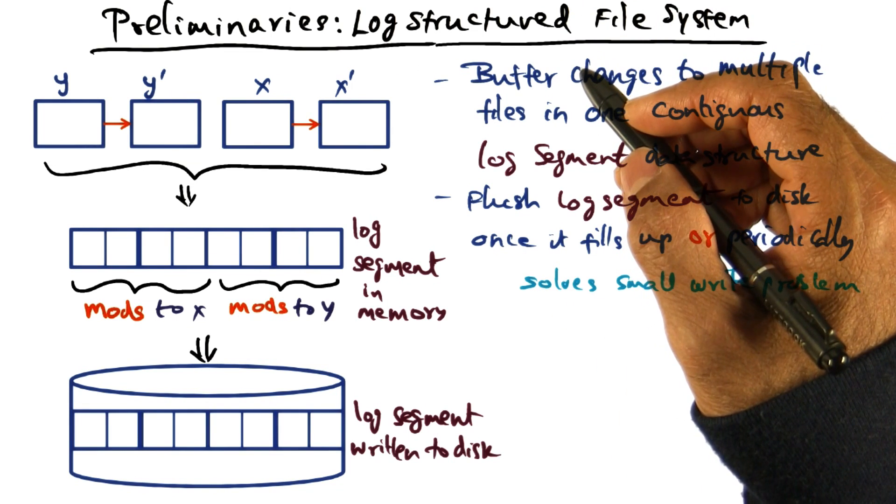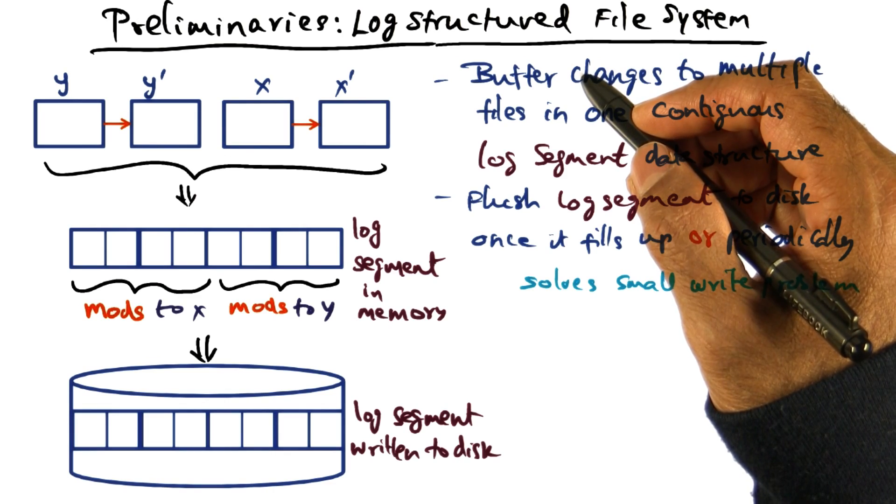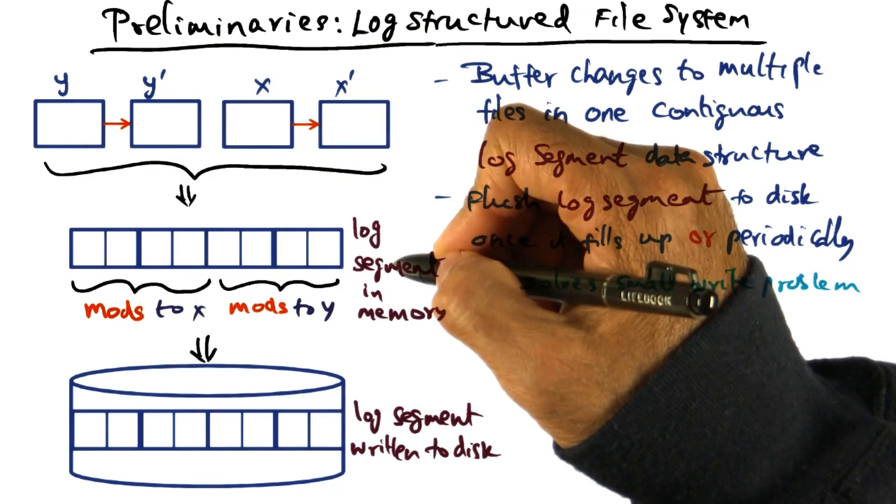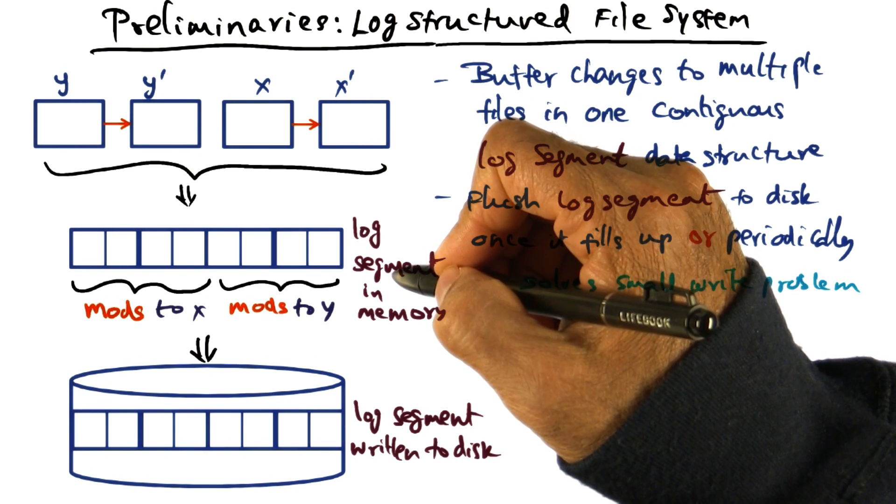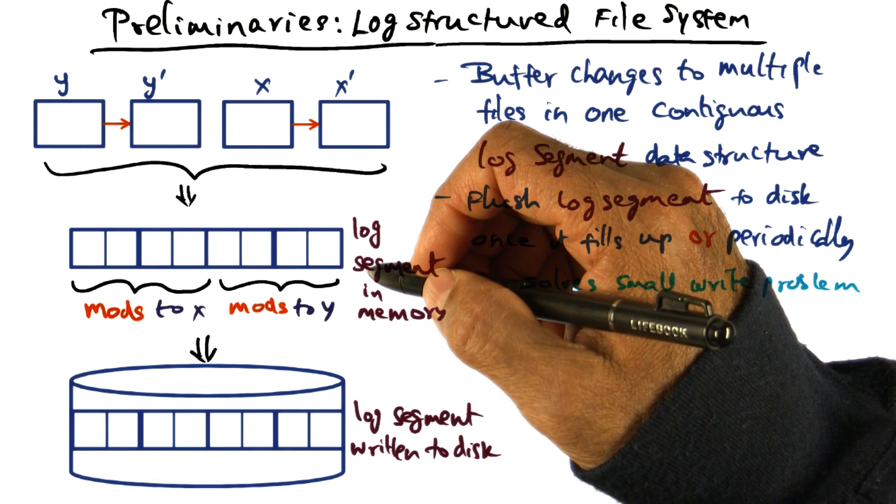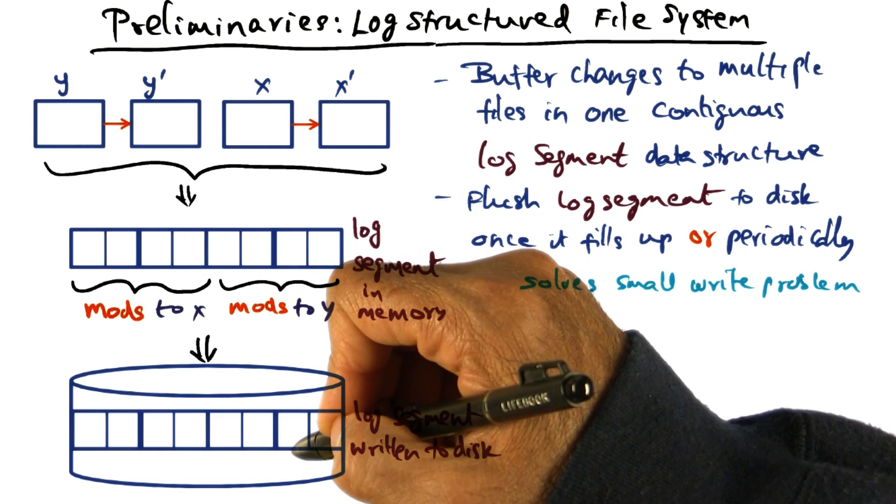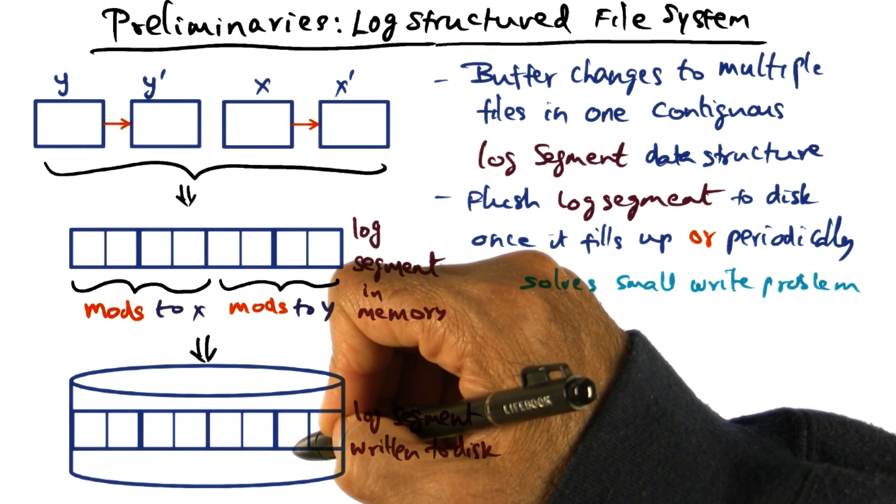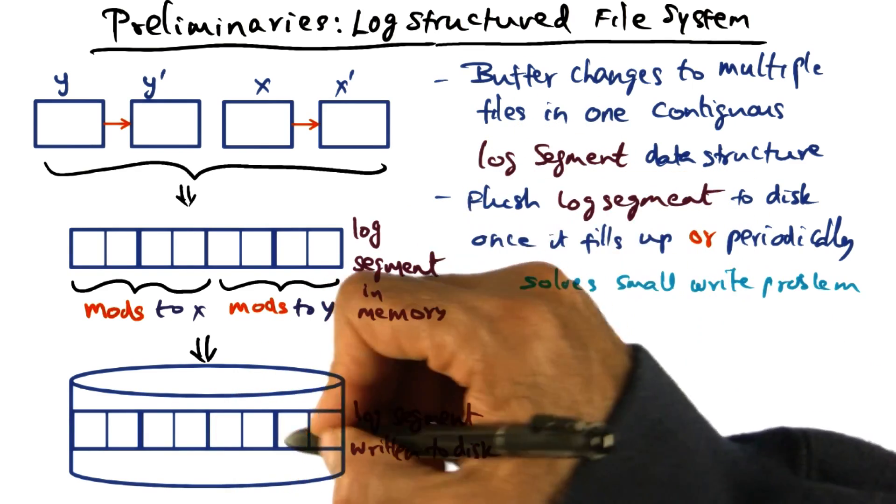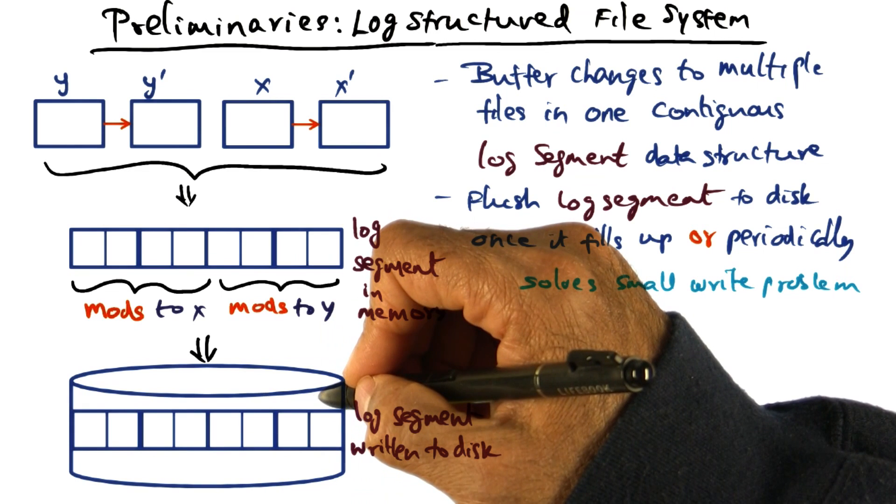And in a log-structured file system, there are only logs, no data files. You never write any data files. All the things that you're writing are these append-only logs to the disk. And when you have a read of a file, if it has to go to the disk and fetch that file, then the file system has to reconstruct the file from the logs that it has stored on the disk.